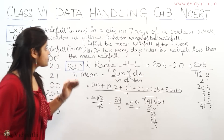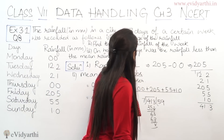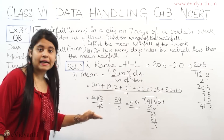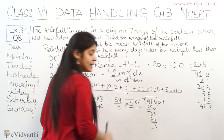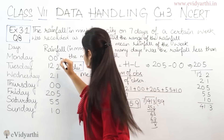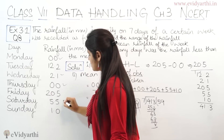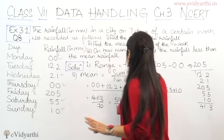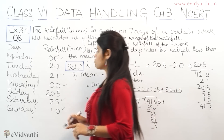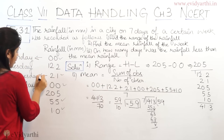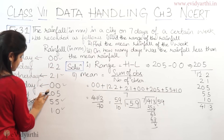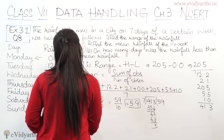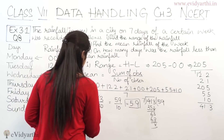Now going to the third part: on how many days was the rainfall less than the mean rainfall? The mean rainfall is 5.9. Looking at the data, which values are less than 5.9? 0.0, 2.1, 0.0, 5.5, and 1.0 — that is 1, 2, 3, 4, 5 days. On 5 days the rainfall was less than the mean rainfall. Those days are Monday, Wednesday, Thursday, Saturday, and Sunday. The answer to the third part is 5 days.